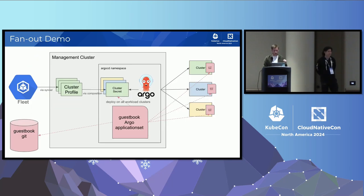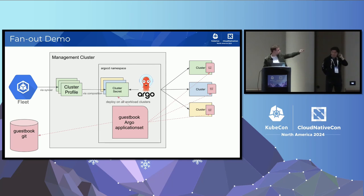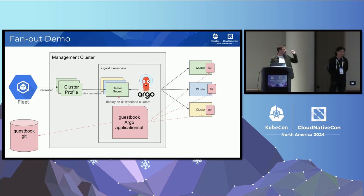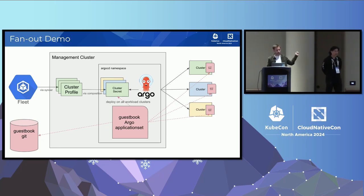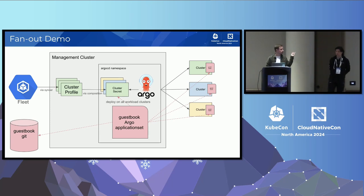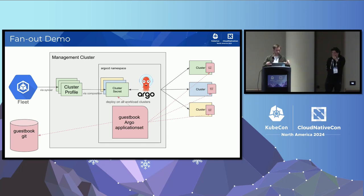I put together an entire demo application. Starting from the left: I have my GKE fleet, a tiny syncer I wrote — really a bash script in a loop — that writes into cluster profile. Then a little composition that translates the cluster profile into a cluster secret for Argo. If you're familiar with Argo, it's entirely declarative for configuration. That was an easy way to use the translation method from cluster profile to cluster secret. Then to show it all, I have a tiny guestbook application as an application set that goes on any workload cluster of my fleet.